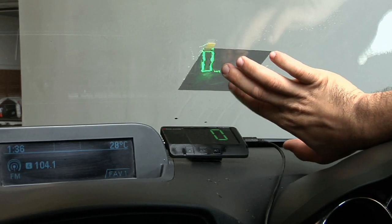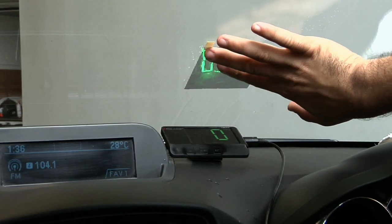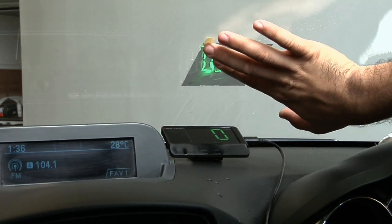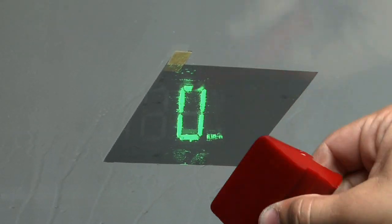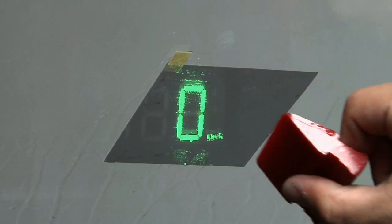Then apply the tint by sliding it into the best position that shows the reflection for the driver. Once the film is in the desired spot, squeeze all the excess water and air out by moving a flat surface across the tint, for example the straight edge of a credit card or a small ruler.